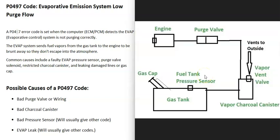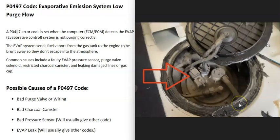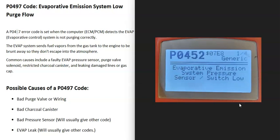The next thing that could cause this is a bad pressure sensor. There's a pressure sensor inside of the system, and this is where the computer gets its information about what's going on. If there's some kind of issue with that sensor, there might not be any actual problem inside the system, but the computer thinks there is because it's getting bad information. If everything else tests good and you can't figure out the issue, go test that pressure sensor. These can be located differently — sometimes on the fuel pump, sometimes on top of the gas tank, sometimes inside the charcoal canister. When pressure sensors fail, they usually give another code, such as P0452 — evaporative emission system pressure sensor switch low. If you are getting a pressure sensor code, check that sensor first.